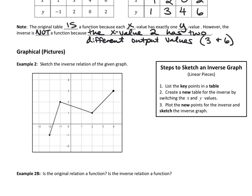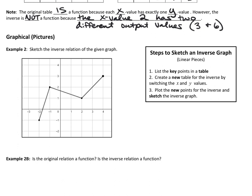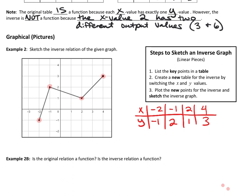From a picture, you're still switching the x's and y's, but we're going to do this in a different way. First things first, we're going to list the key points in a table. These are like four different linear pieces put together to create this shape. We're going to create a table of x's and y's. The first coordinate is at negative 2, negative 1. The next is at negative 1, 2. Then 2, 1. Then 4, 3. Instead of calling this y, I'm going to call this f of x, and for the inverse we'll call it f inverse.